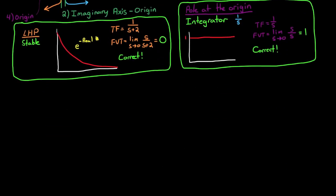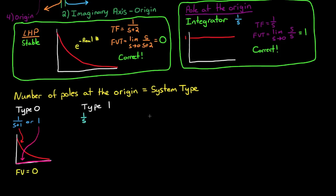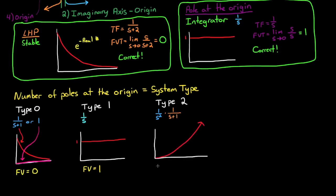The number of poles at the origin is called the transfer function type, or the system type. If there are no poles at the origin, then the type is 0, and for type 0 systems the final value is also 0 — if all of the poles exist in the left half-plane. If there is one pole at the origin, then that is a type 1 system, and the final value of a type 1 system is some finite real number, again only if the rest of the poles are in the left half-plane. If there are two poles at the origin, that is a type 2 system, and just like the integral of a step output is a ramp, type 2 systems ramp up to infinity for their final value. If you keep increasing the type number, all systems that are type 2 or higher have final values of infinity.